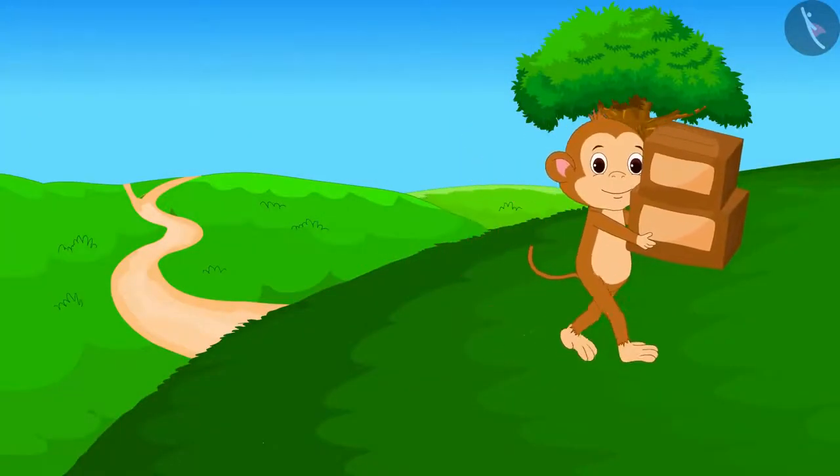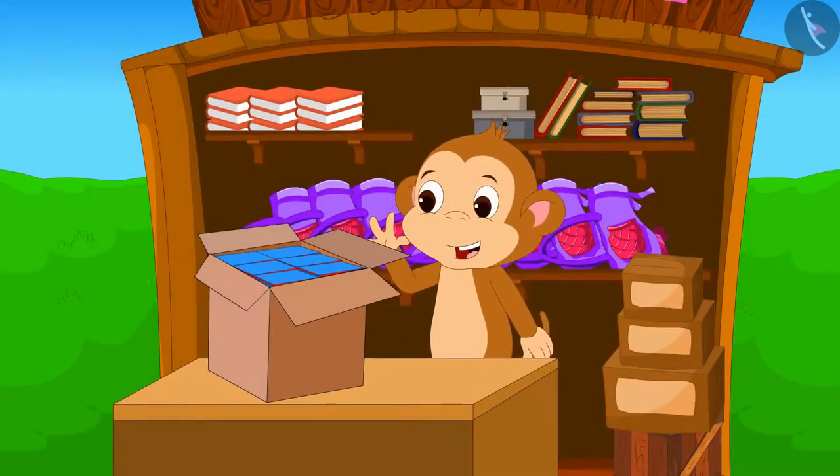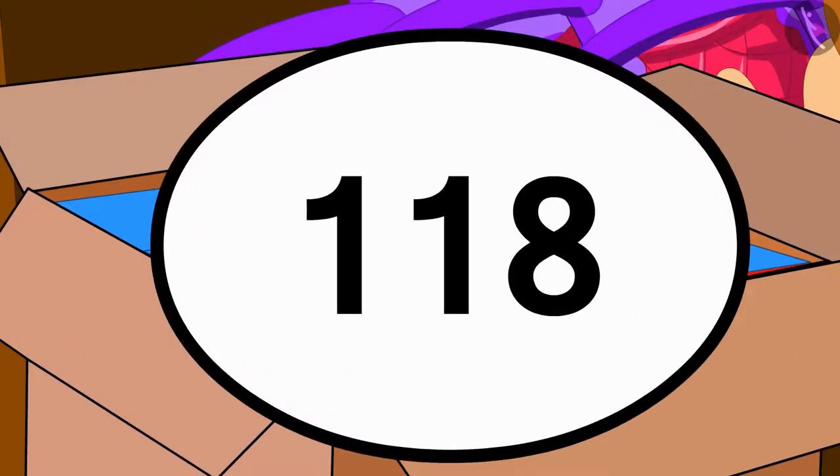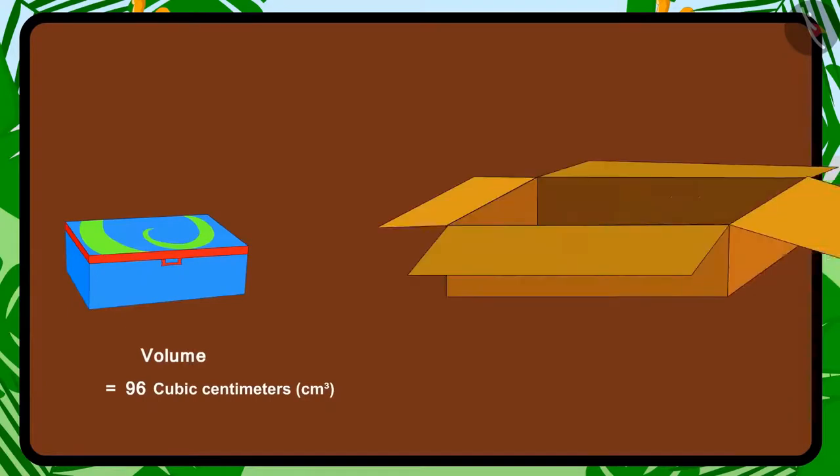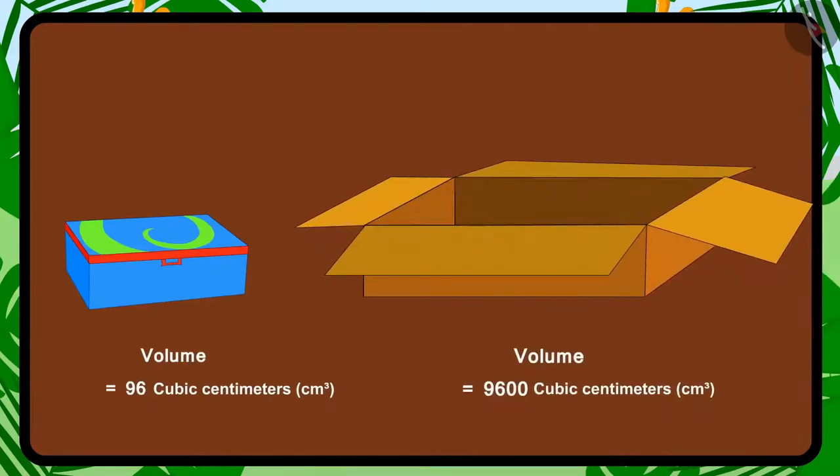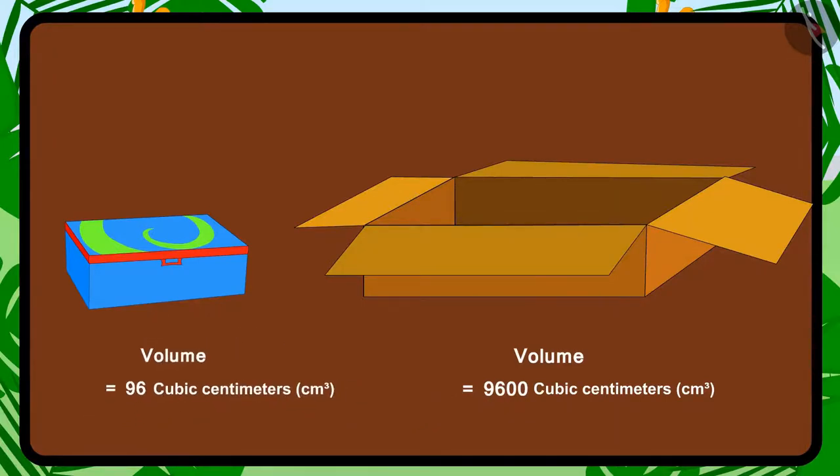In the previous video, we saw how Babban used two boxes and brought 118 compass boxes from the city to sell in his shop. And children, do you remember that the volume of each compass box is equal to 96 cm³?